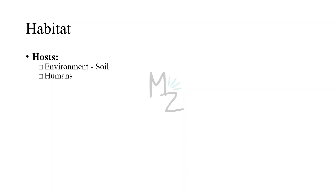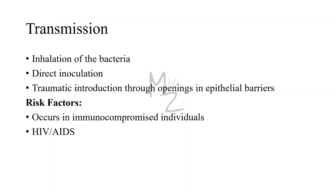Habitat: Nocardia species are found in the environment, particularly in soil. Humans are its hosts because it causes infection in humans. Transmission occurs via inhalation of the bacteria, which are present in soil. It can also be transmitted via direct inoculation or traumatic introduction through openings in epithelial barriers. A key risk factor for nocardiosis is being immunocompromised when in contact with soil containing Nocardia asteroides.